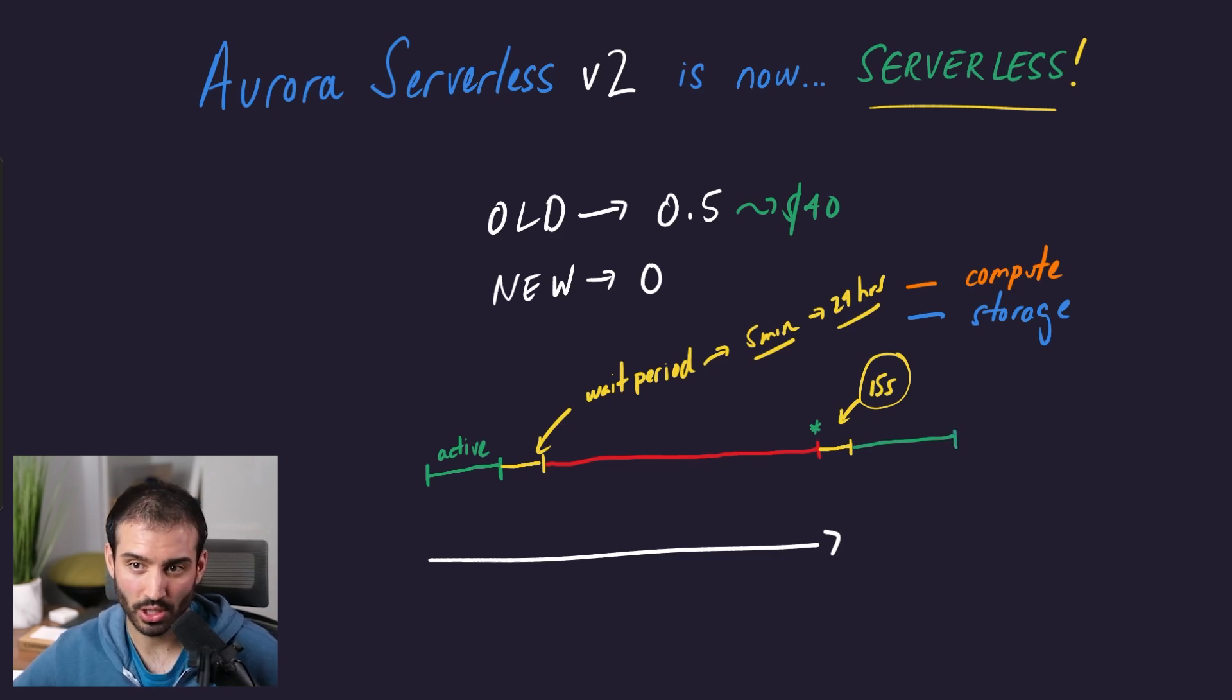Now in terms of what you're charged for, we had blue to denote storage and orange to denote compute. One thing to note is that you are always charged for storage, even during the paused period and in the wake-up or active period. That never changes—you're always charged for storage. So it's scale down to zero, but kind of.